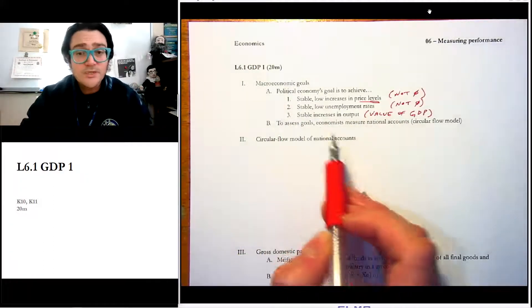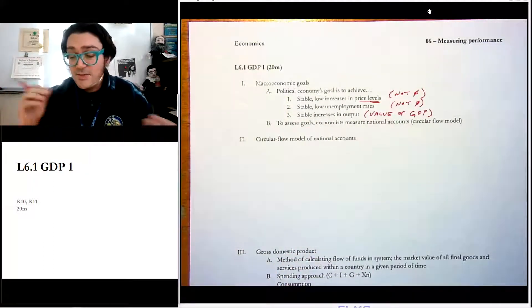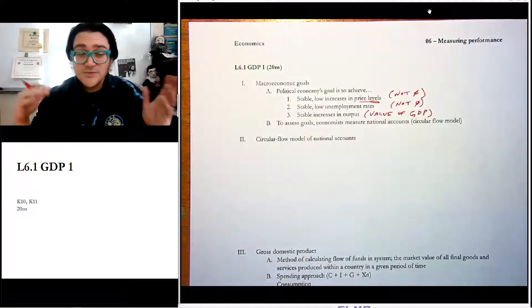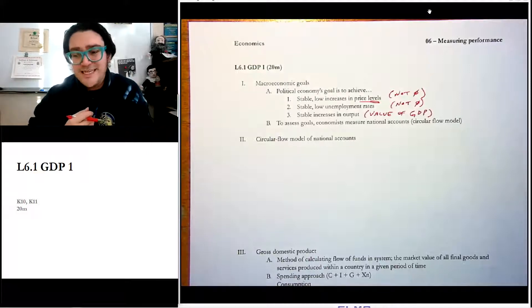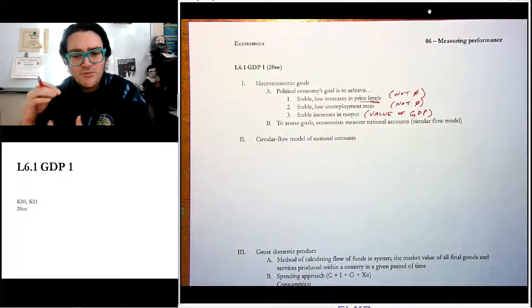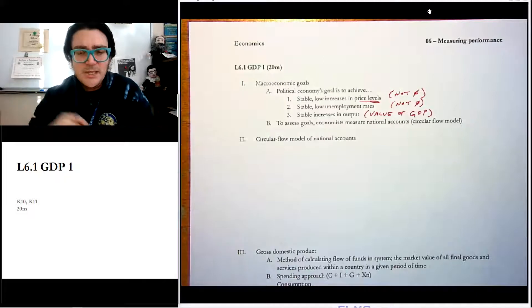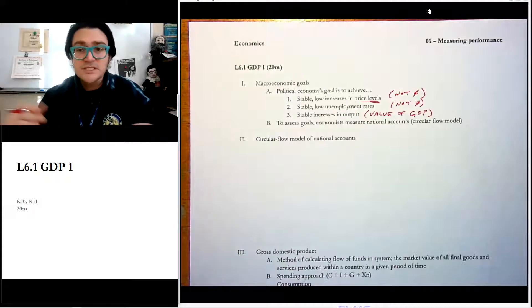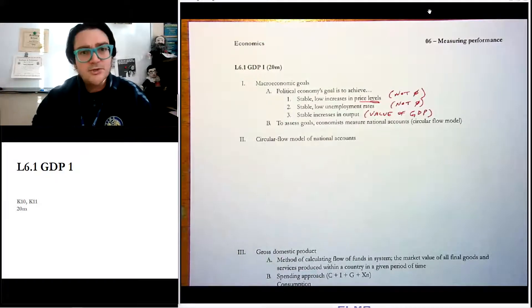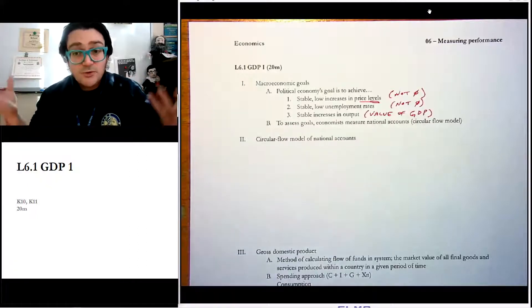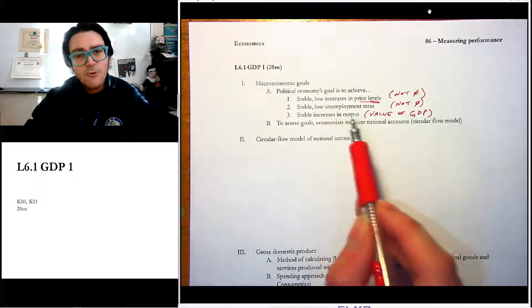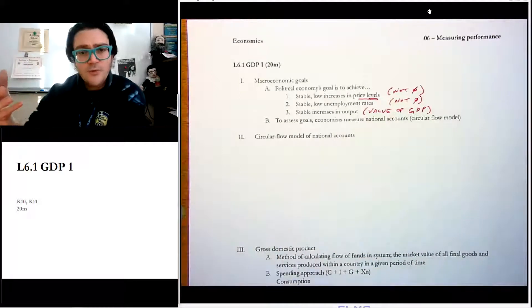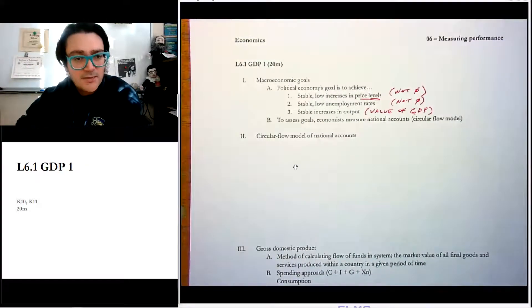Now, in order to assess how we're doing on the goals, economists create these things called national accounts. And it might be useful to just tell you, this is very new. This is only since really World War Two that we've created these kind of accounting measures, we keep the books. So unemployment really dates to only really World War Two. Inflation rates have only been really measured since the 20th century. And GDP likewise was invented really in the 1930s and 1940s. Someone sat down and said, his name is Simon Kuznets, he sat down and said, let's figure out a good way to measure the amount of output. So these national accounts, they're created.